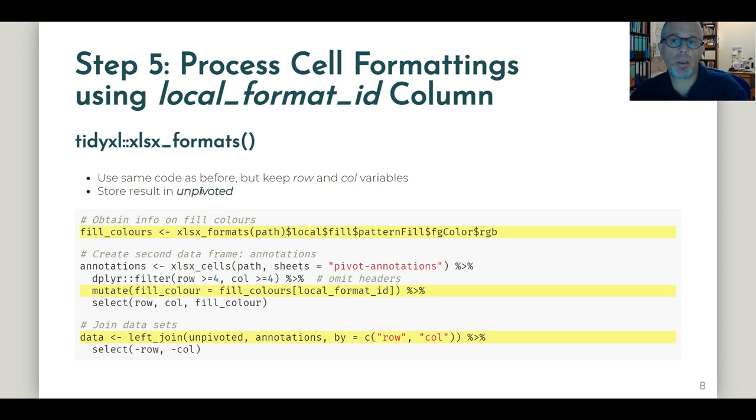Now we need additional information corresponding to these highlighted cells. So we're using the xlsx_formats function. And you see that what it returns is a deeply nested list.